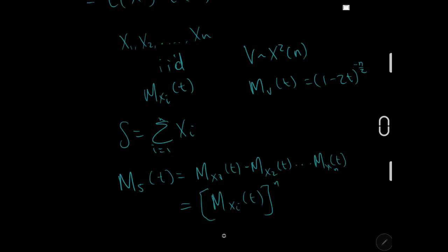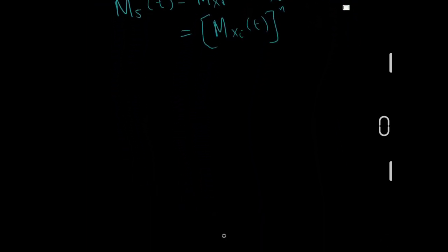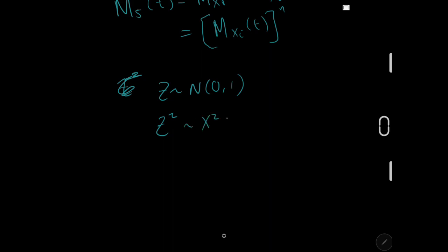The last prereq you need is that if you have one standard normal — so just one Z ~ N(0,1) — then that standard normal squared has a chi-squared distribution with one degree of freedom. I have proof videos for this; they should be on the screen so you can go watch them. That's just so you know what the distribution of one normal squared is.